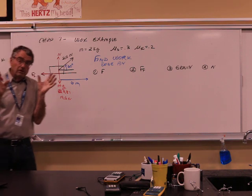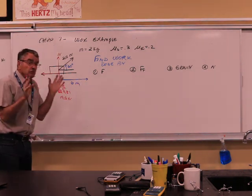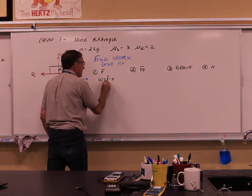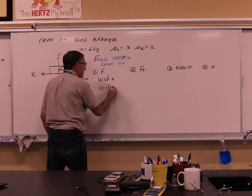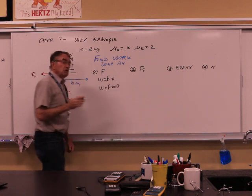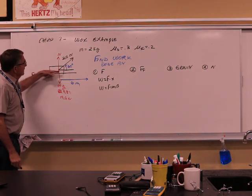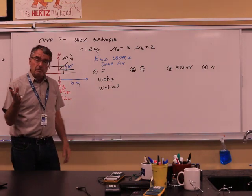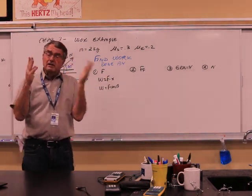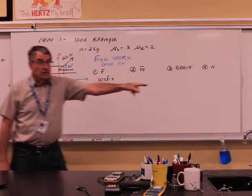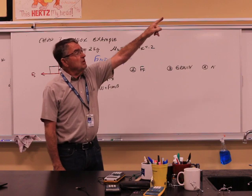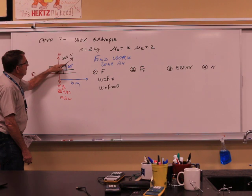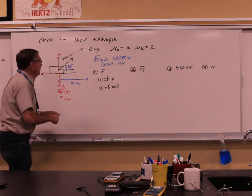Now be careful. I want to make sure we use work correctly. Work is a dot product. Dot product means F cosine of the angle, which really means the force acting in the x direction. From the concept, you do work when the force and the distance are in the same direction. There's your distance — force is this way — you want the component of force acting this way.